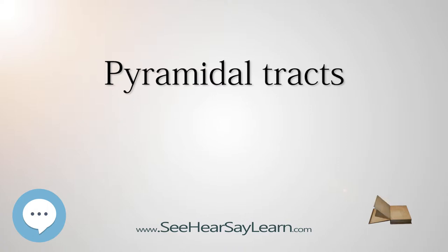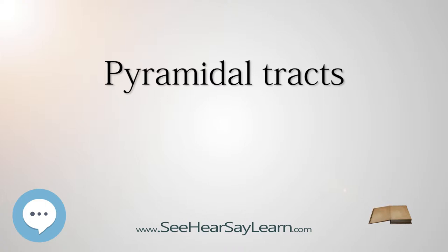The term pyramidal tracts refers to upper motor neurons that originate in the cerebral cortex and terminate in the spinal cord, corticospinal, or brainstem, corticobulbar. Nerves emerge in the cerebral cortex, pass down and may cross sides in the medulla oblongata, and travel as part of the spinal cord until they synapse with interneurons in the gray column of the spinal cord. There is some variation in terminology; the pyramidal tracts definitively encompass the corticospinal tracts, and many authors also include the corticobulbar tracts.